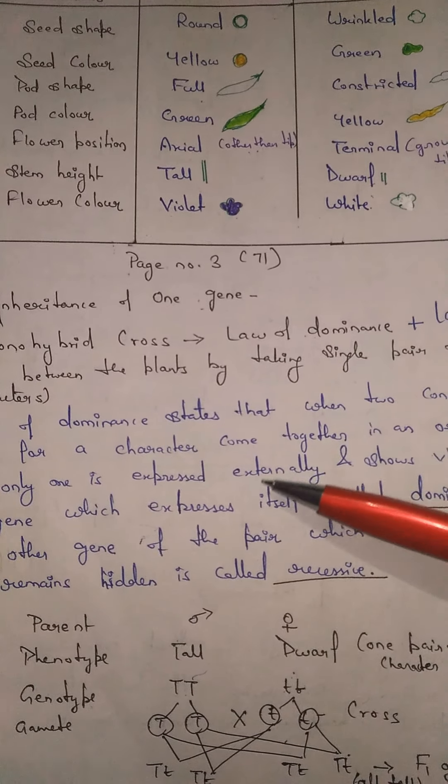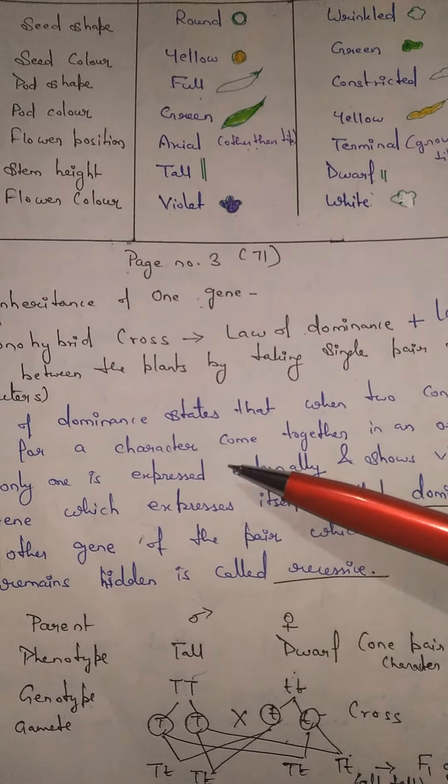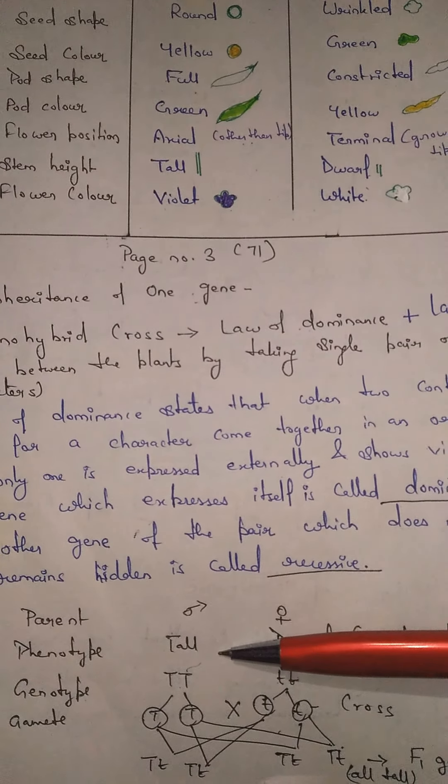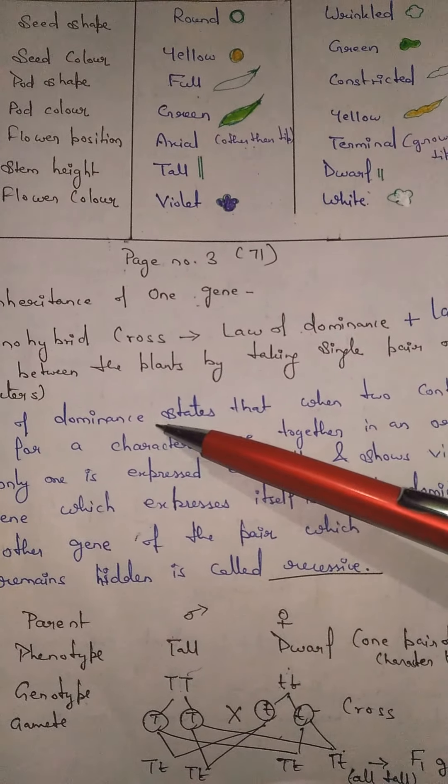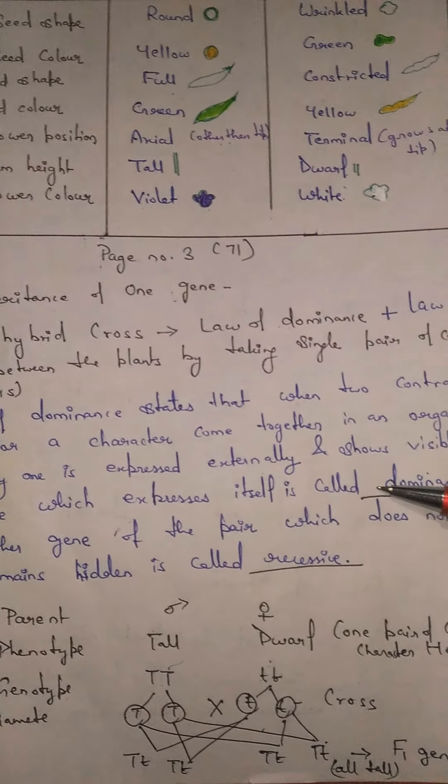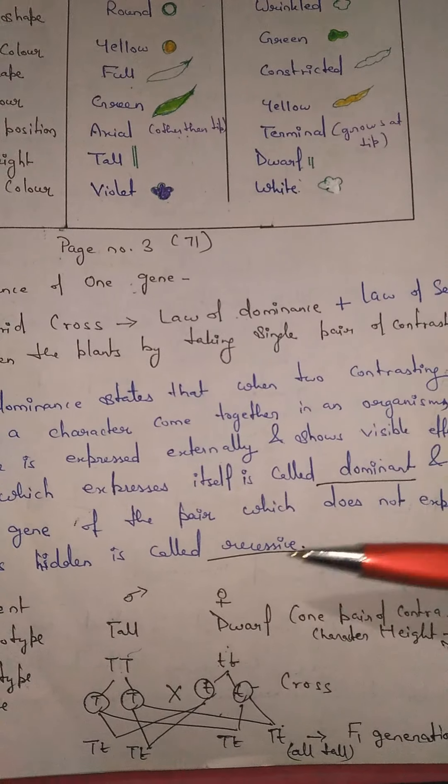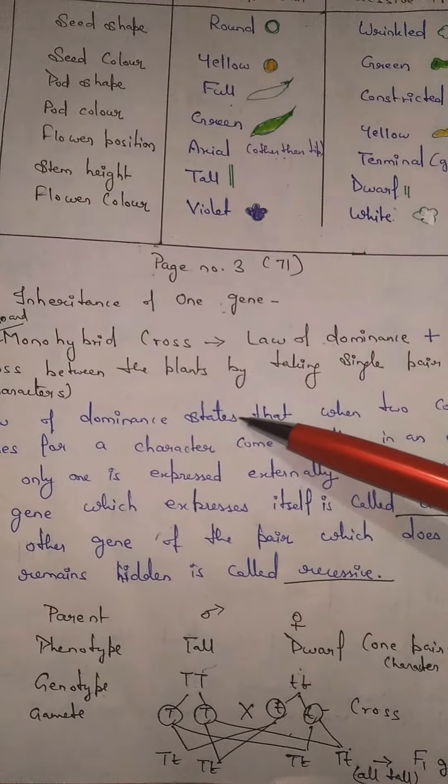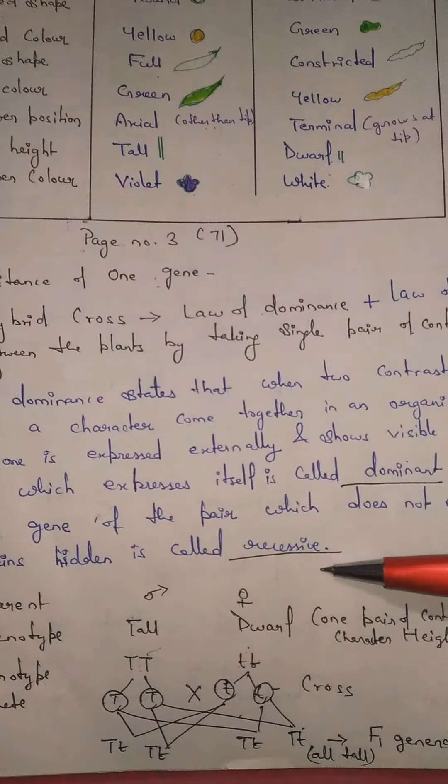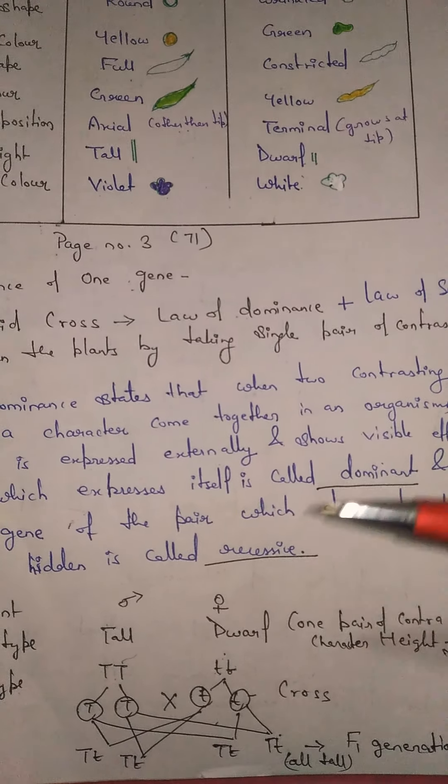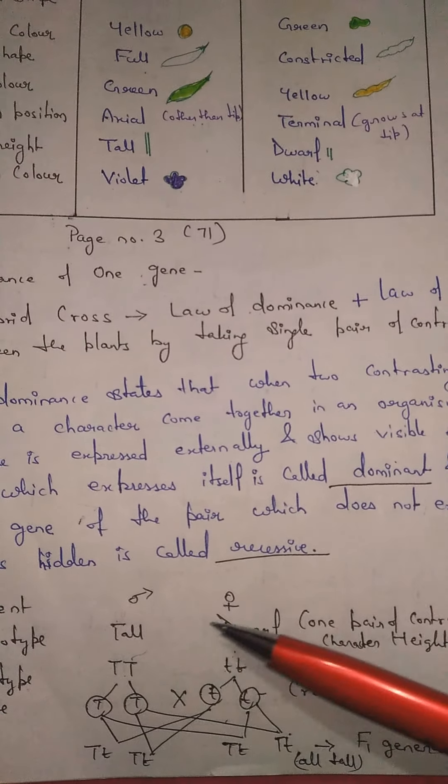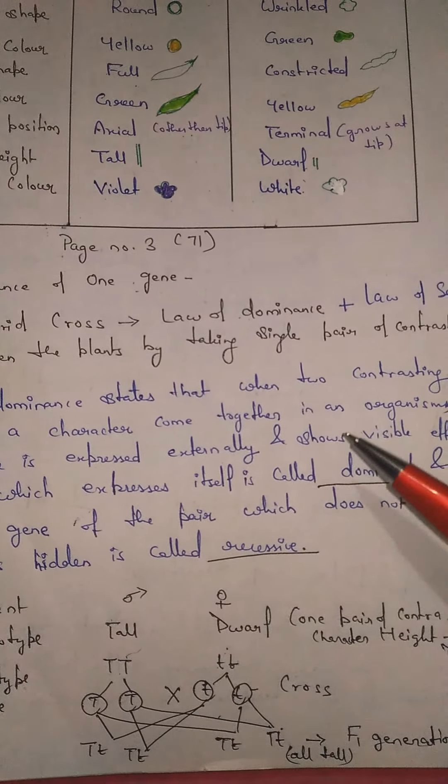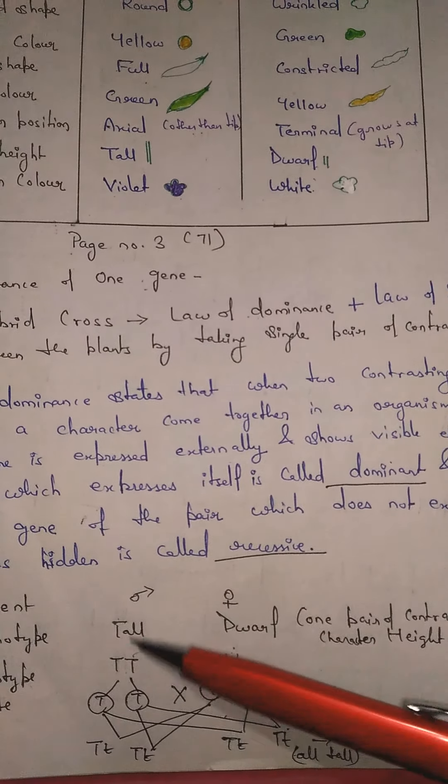The character which is going to express itself, that means that gene which can express itself after the cross of the first generation - the parent plant which is our first generation - that would be the dominant.